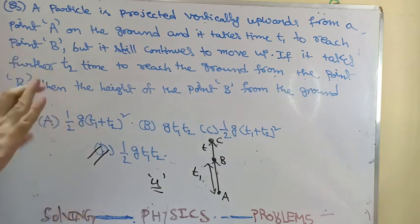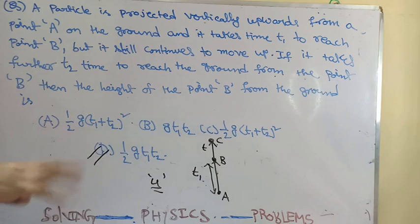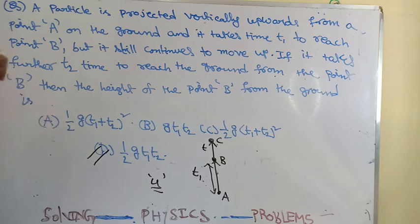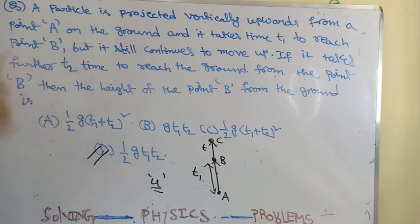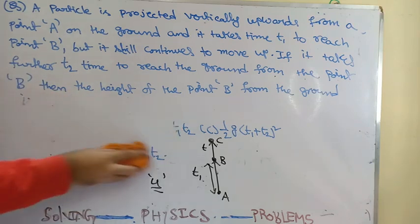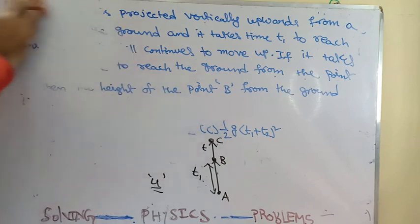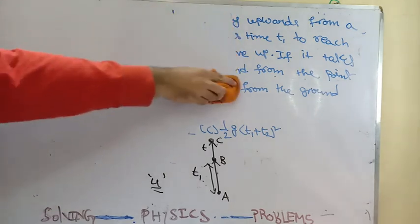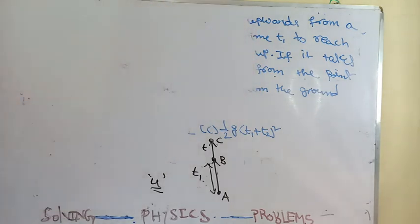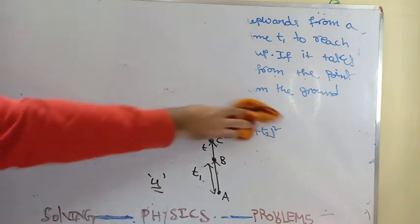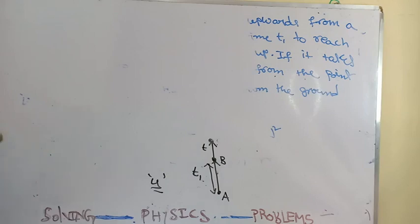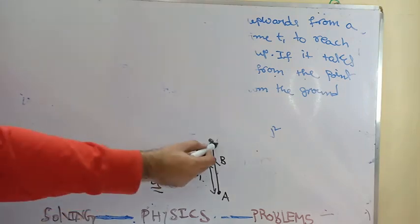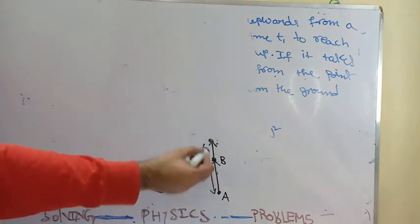At the maximum height, the velocity will be zero — that we know clearly. From point A to point B, the time given is t1. From B to C, assume the time is t. From point B onwards the particle comes down and hits the ground, and from B to hit the ground it takes time t2.